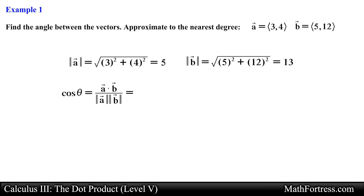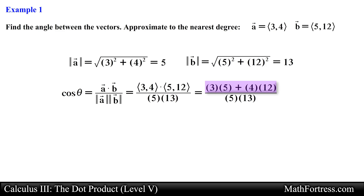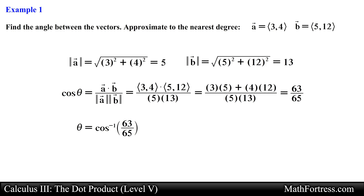Next let's use the rearranged geometric definition of the dot product and substitute the various values on the right side of the expression. Computing the dot product between vector A and vector B we obtain the following. Simplifying the numerator and denominator we obtain the following value for cosine of theta. Finally it is just a matter of solving for the angle, so we take inverse cosine of both sides. Simplifying and rounding to the nearest degree we obtain 14 degrees as the measure of the angle between vector A and vector B.